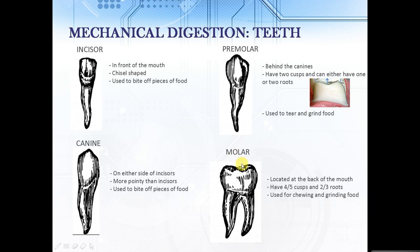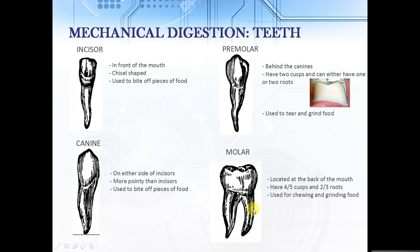At the very back of our mouths we've got molars, which have a very similar function to premolars. We use these to chew and grind our food. They can have either four or five cusps and two or three roots.